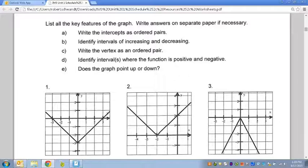Write the intercepts as ordered pairs. The only intercepts I see are right here. That's an x-intercept at negative 2, 0. And I see a y-intercept here at 0, 2. Identify the intervals of increasing and decreasing.